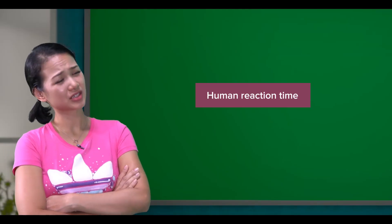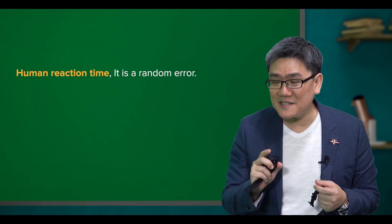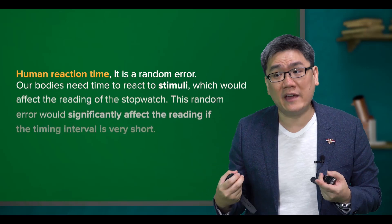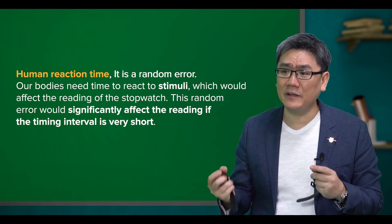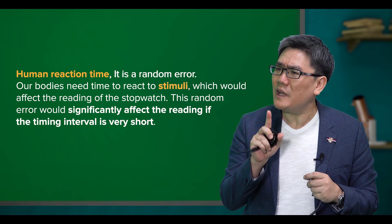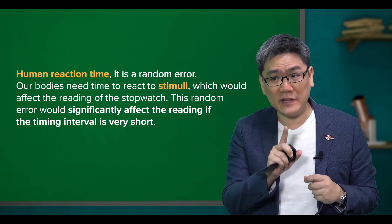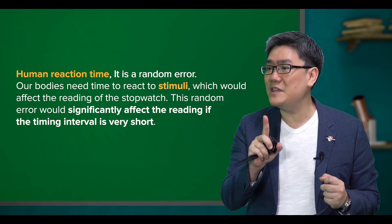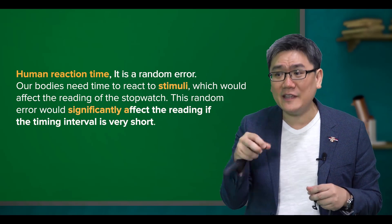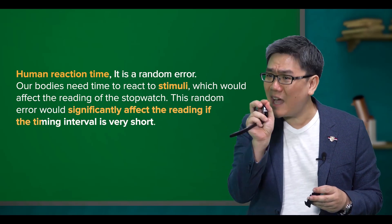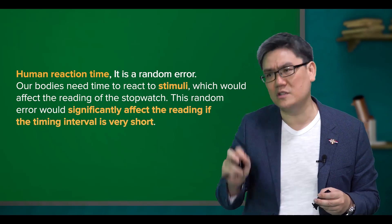Why can't I do it? That's because of human reaction time. Human reaction time? Yes. It is a random error. Our bodies need time to react to stimuli, which would affect the reading of the stopwatch. This random error would significantly affect the reading if the time interval is very short.